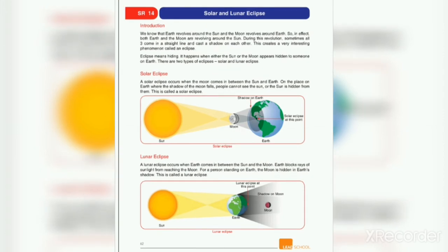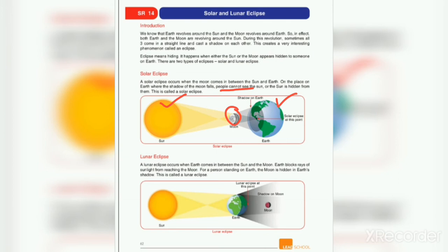A solar eclipse occurs when the moon comes in between the sun and Earth. When the moon comes between the Earth and the sun, on the place on Earth where the shadow of the moon falls, people cannot see the sun — the sun is hidden from them. This is called a solar eclipse. When the sun, moon and Earth all come in a straight line and the moon casts a shadow, solar eclipse occurs.